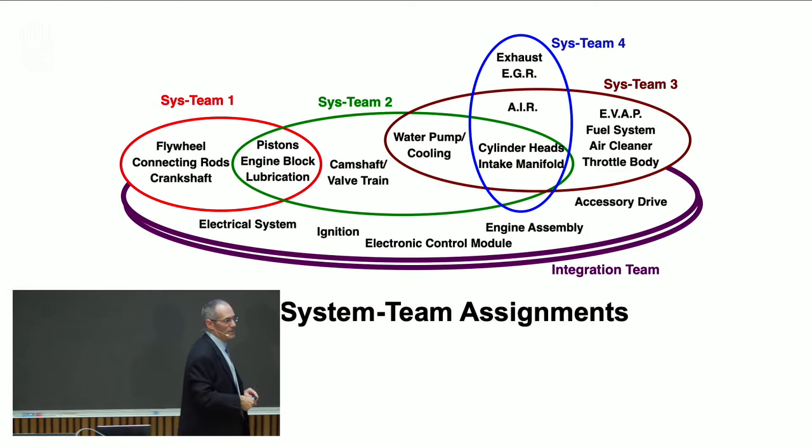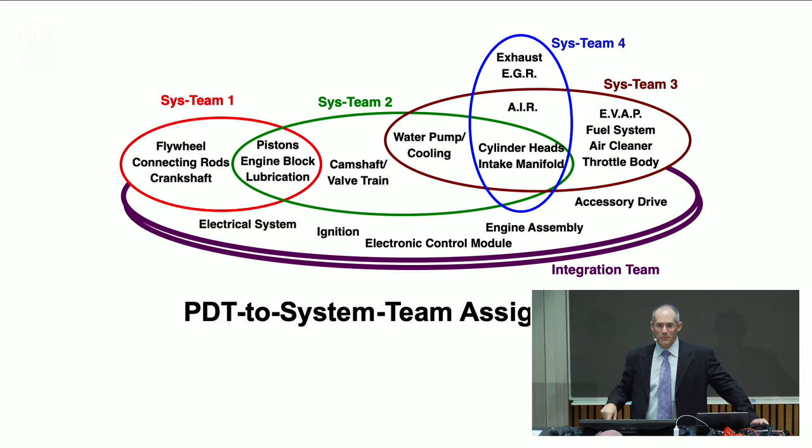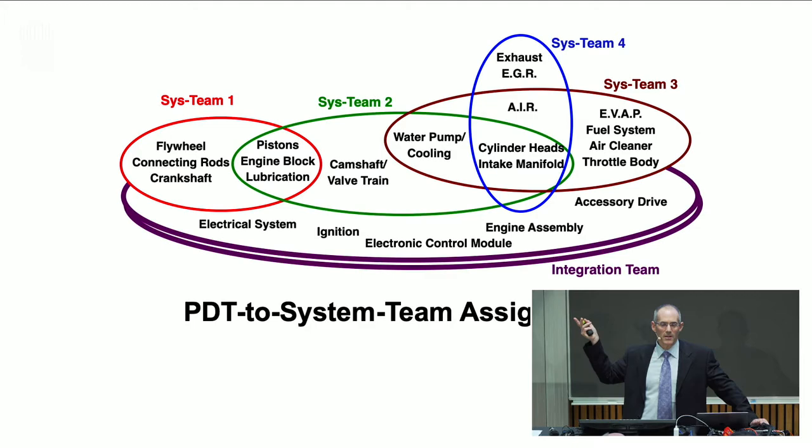This is the diagram they literally put up on the wall. They said the matrix is nice, professor, but we just need to know who's on what team. The result was that this engine program — still in the design phase when we had this intervention — went much better. I went back to them two years later and asked how it went. They said it was the smoothest engine integration phase — the ramp up into production — they'd ever had. This new structure made a huge difference.